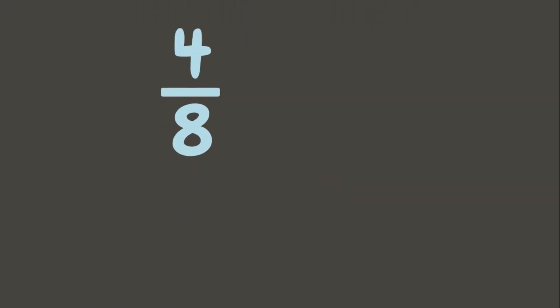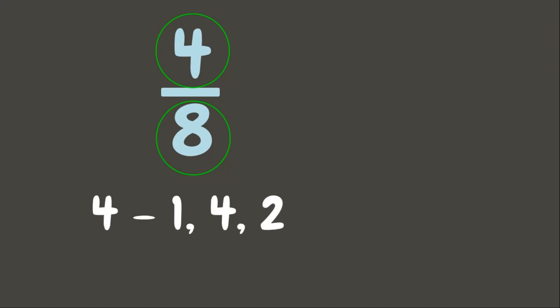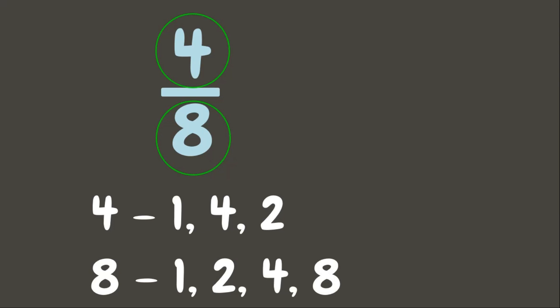How are we going to simplify or reduce a fraction into its lowest term? Let's have this first example. Four-eighths is a proper fraction. In reducing a proper fraction, we simply take the GCF of the numerator and the denominator. To get the GCF of the numerator and the denominator, let us list down all the possible factors of four and eight. We can see that their greatest common factor is four.